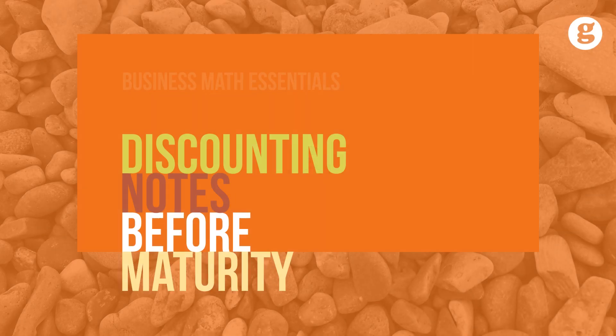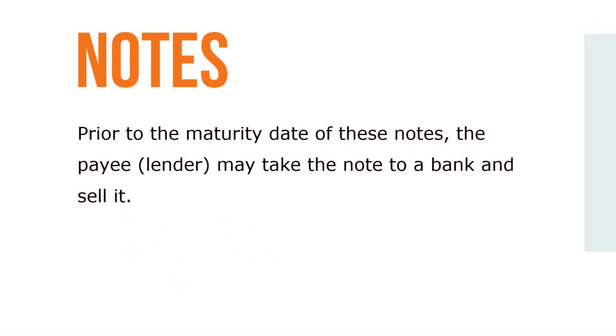Frequently in business, companies extend credit to their customers by accepting short-term promissory notes as payment for goods or services. These notes are simple interest and are usually for less than one year. Prior to the maturity date, the payee — the lender — may take the note to a bank and sell it. This is a convenient way for a company or an individual to cash in a note.